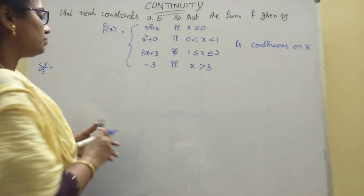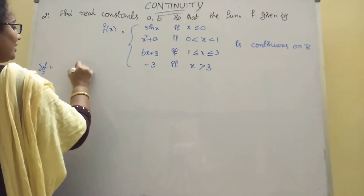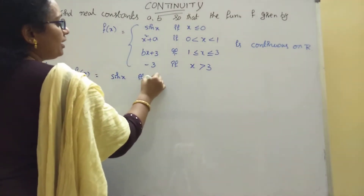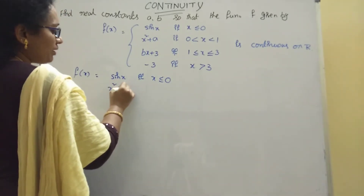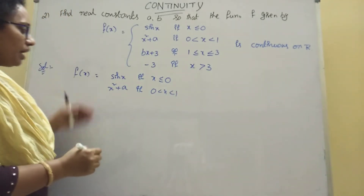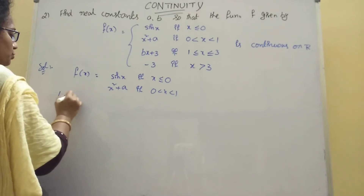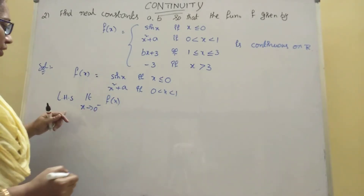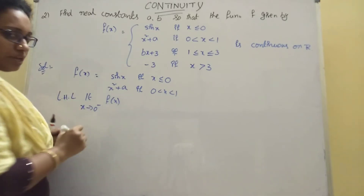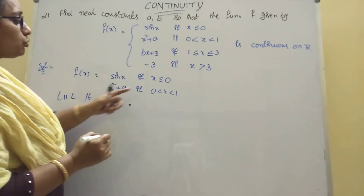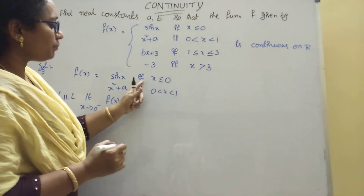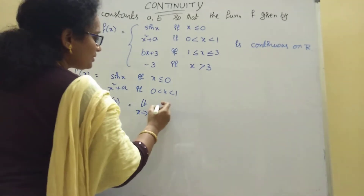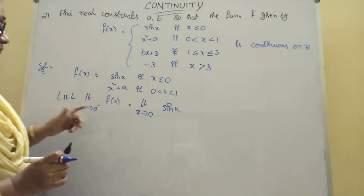The function f(x) is defined as: f(x) = sin x if x ≤ 0; some expression for 0 < x < 1; and another expression beyond that. We consider the breakpoints at x = 0 and x = 1 (or x = 3), computing left hand and right hand limits at each.